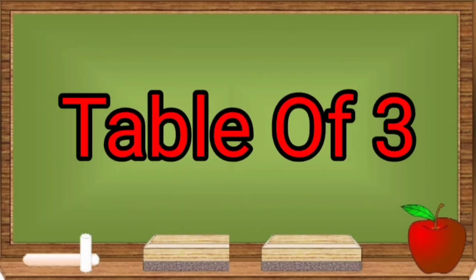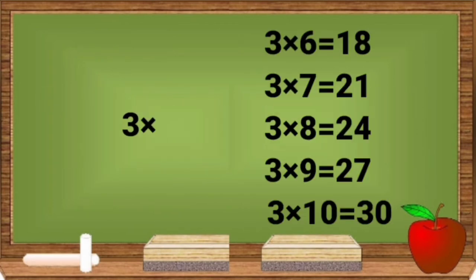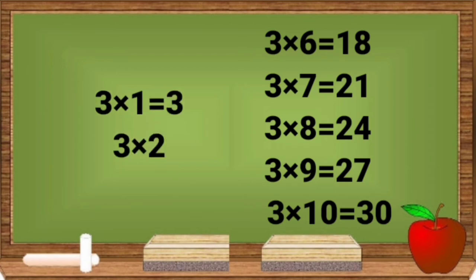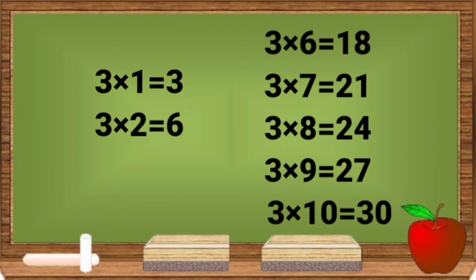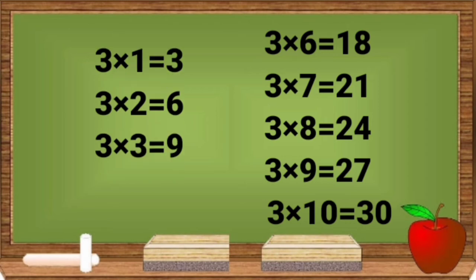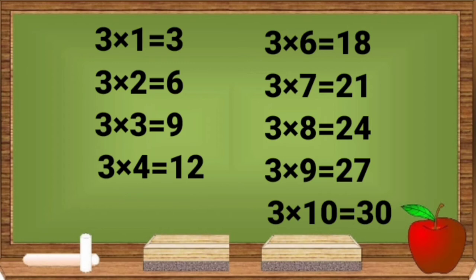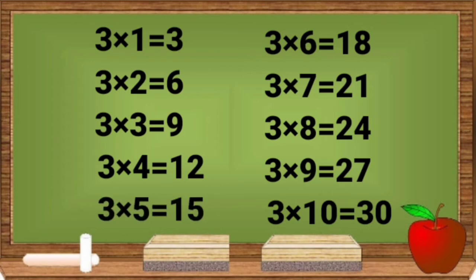3 ones are 3. 3 twos are 6. 3 threes are 9. 3 fours are 12. 3 fives are 15.